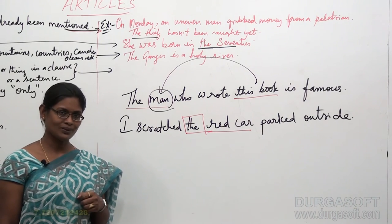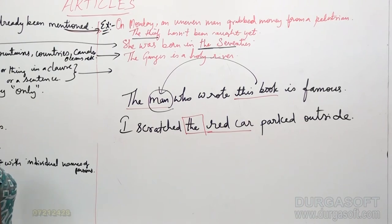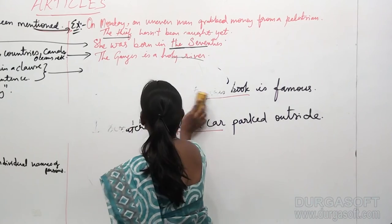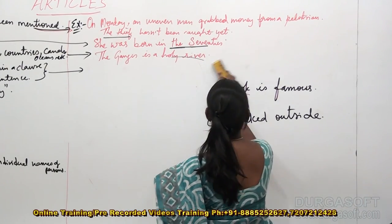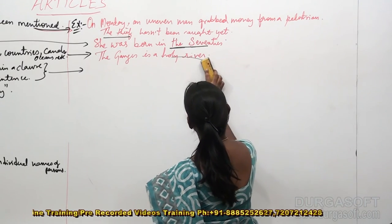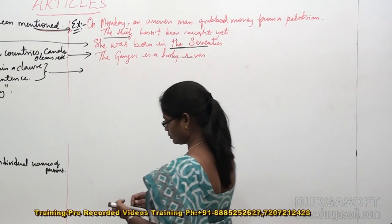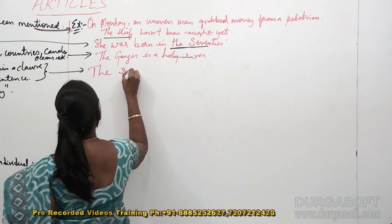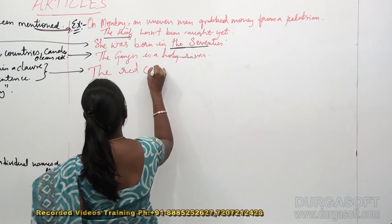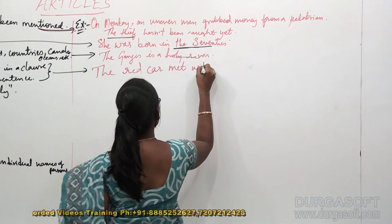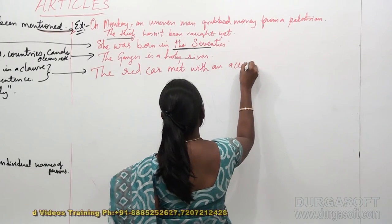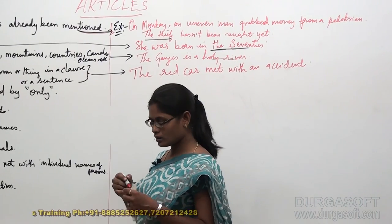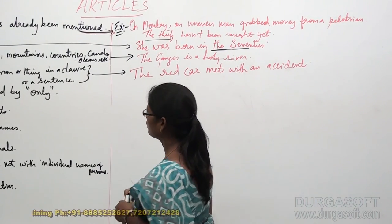Let me jot down this example. The red car met with an accident. Now let's look at the fifth point.